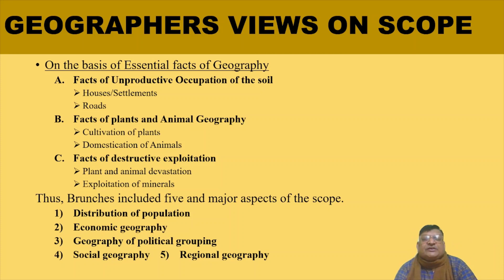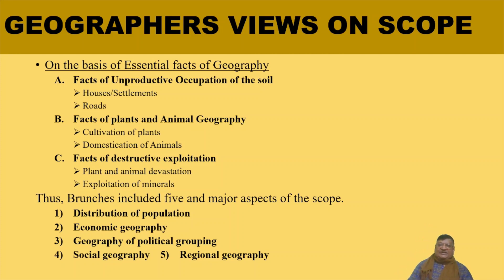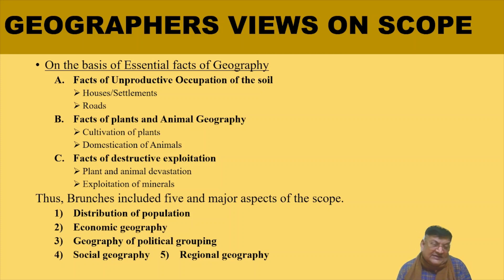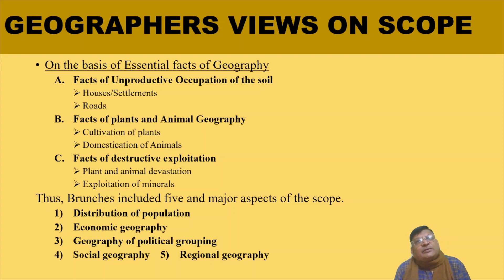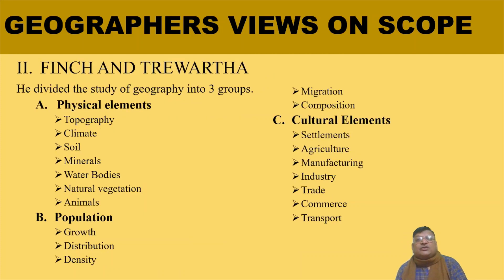Based on essential facts, the scope was further divided into: Facts of Unproductive Occupation of the Soil, Facts of Plants and Animal Geography, Facts of Destructive Exploitation, Plant and Animal Devastation, and Exploitation of Minerals. Brunes included five major aspects of scope: Distribution of Population, Economic Geography, Geography of Political Grouping, Social Geography, and Regional Geography.